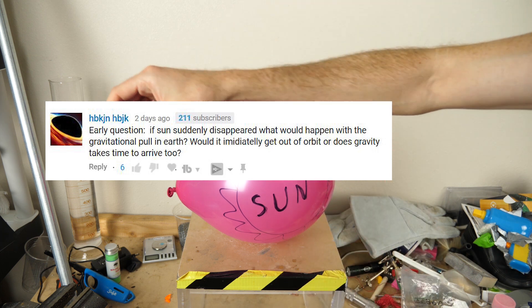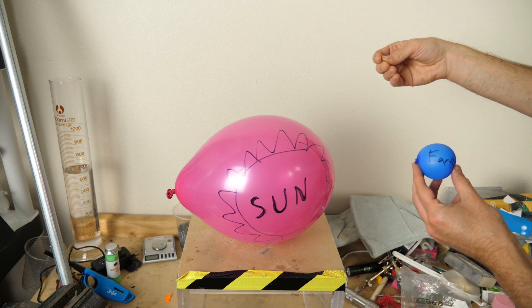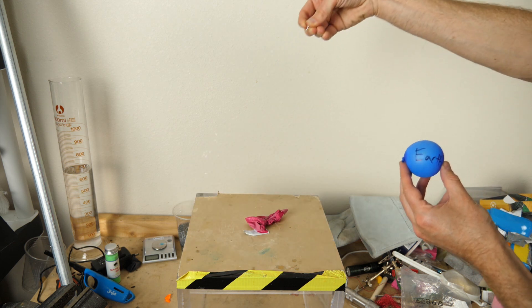And it goes like this, the earth is orbiting the sun due to gravity, but what would happen to the earth if suddenly the sun disappeared?